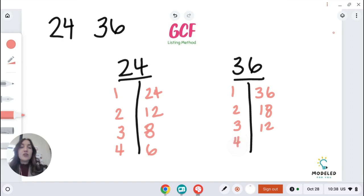What about 4? 4 times 9. That works. Now 4 and 9 are pretty close on the number line as well. So now I really only have to go up a couple more just to see. Now I know 5 doesn't go into 36.